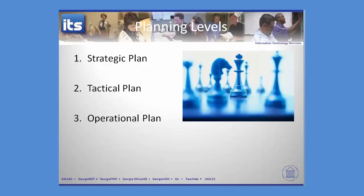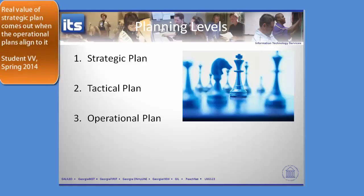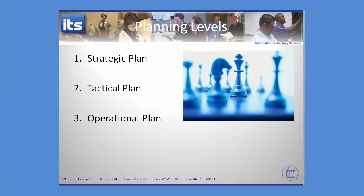Each of these tiers nests within each other. You may have a strategic plan that consists of multiple tactical plans that help implement it, and those tactical plans may have operational plans associated with them. It really depends on the type of organization and its culture. What we're going to do now is talk about the basic structure of a strategic plan and then go into a governance model for maintaining it.